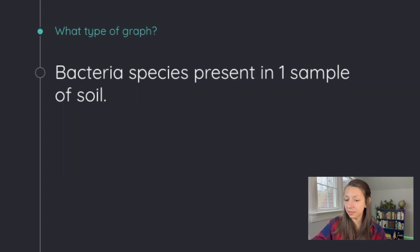For this one, bacteria species present in one sample of soil. Think about it. You might want to choose a pie chart in this case. You could talk about all the different species and then graph them by percent on your pie chart, seeing which species add up to the largest percentages on your pie chart.